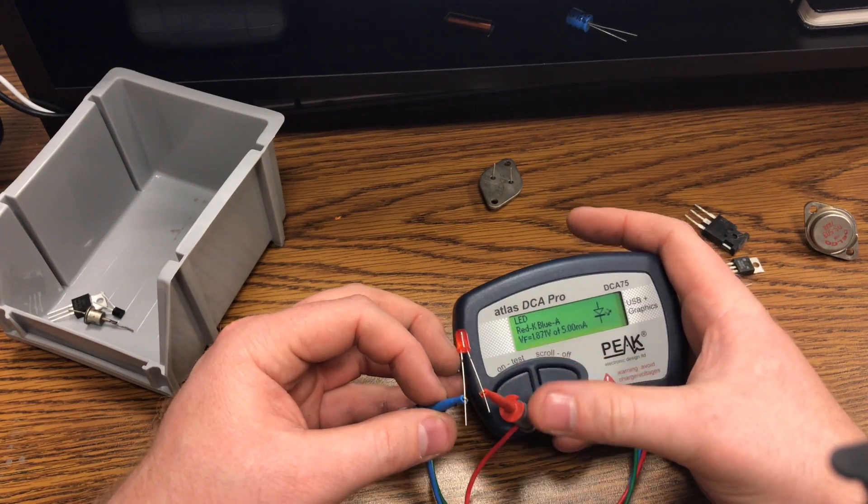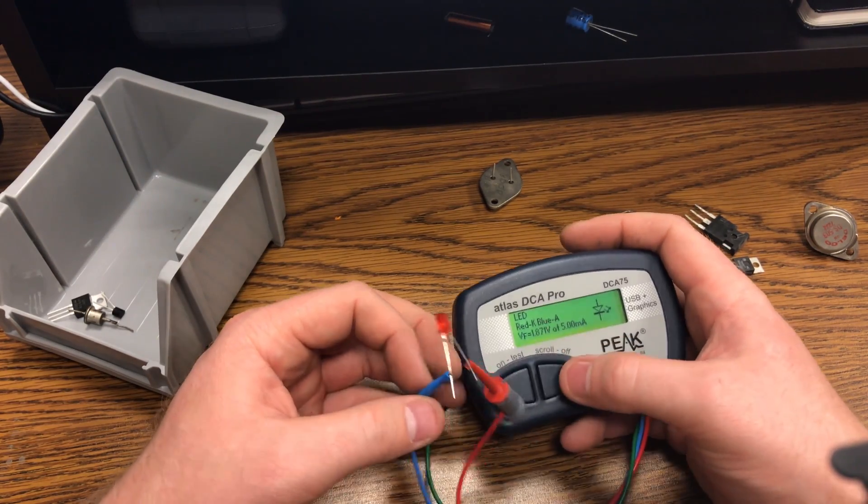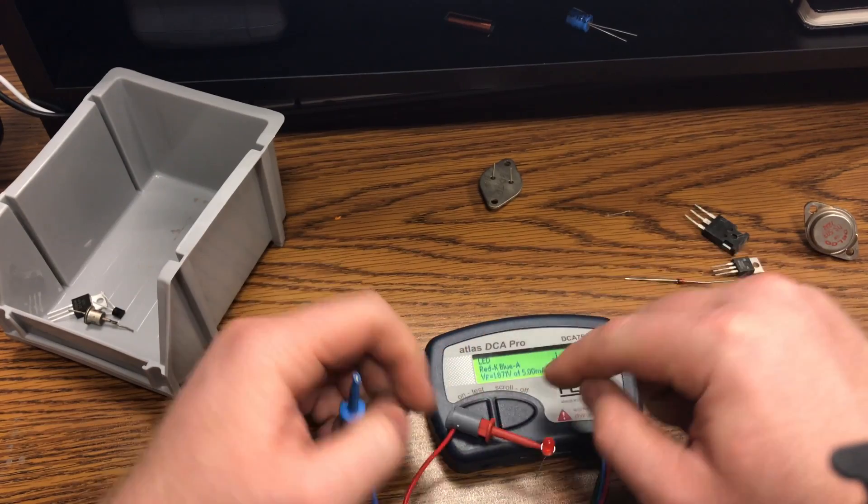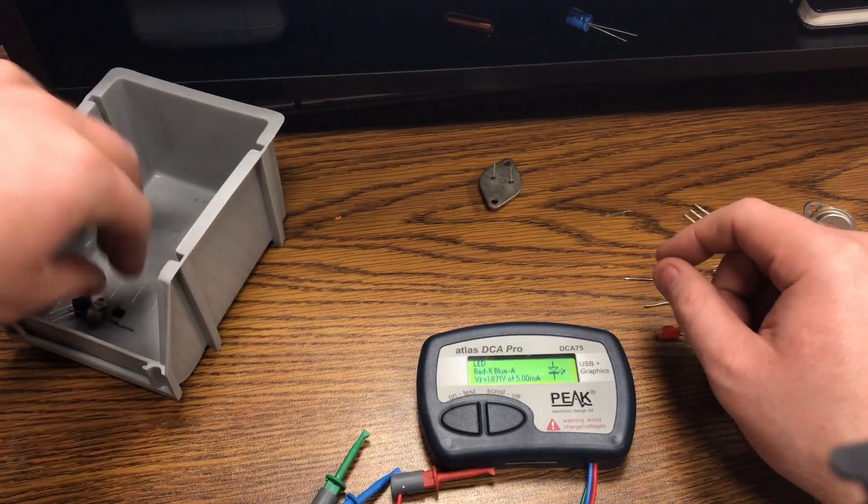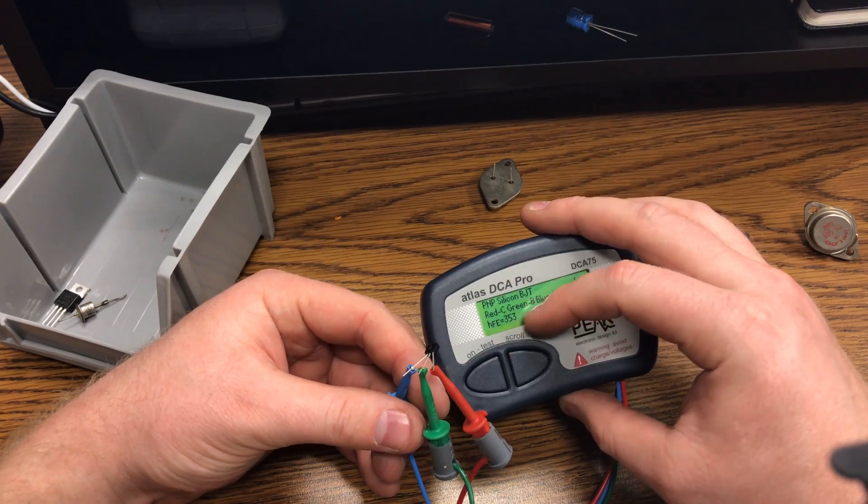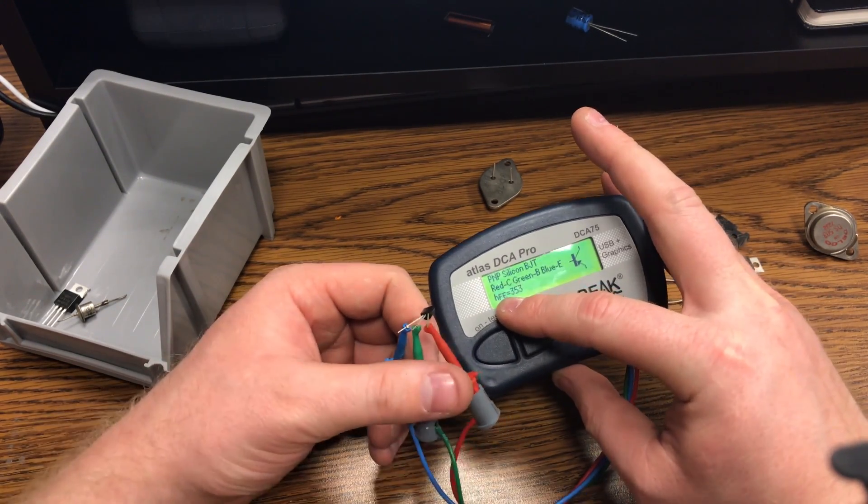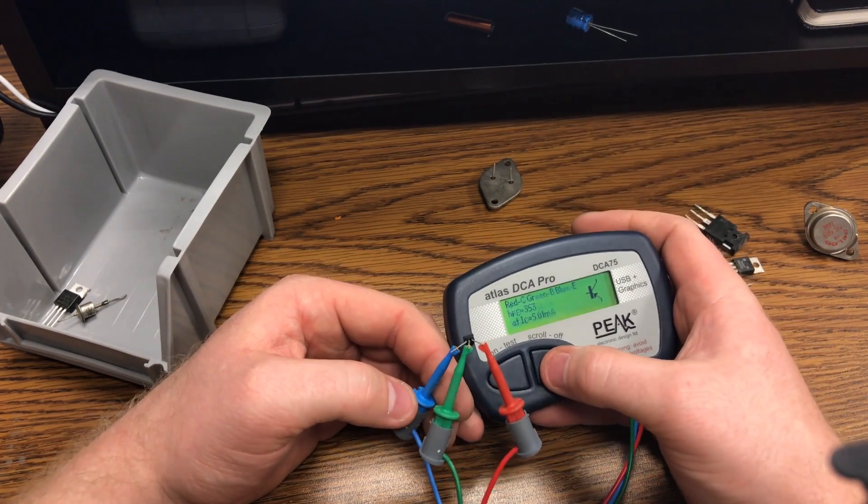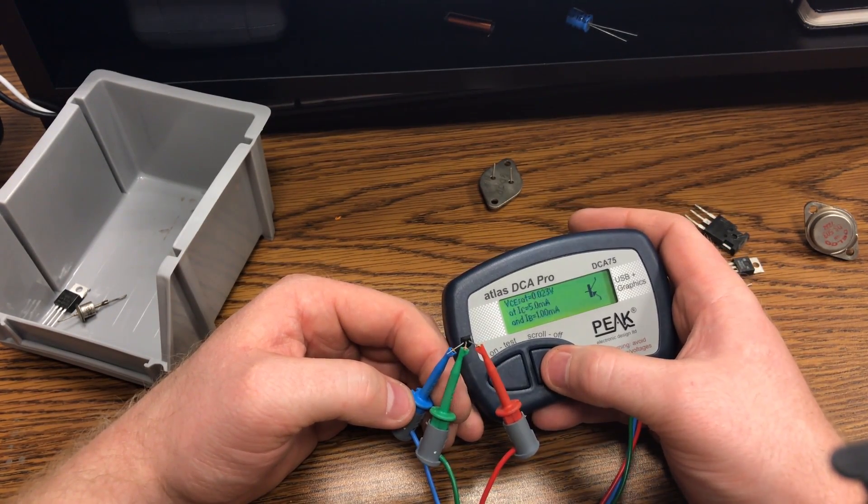Knows that it's an LED, and the red is cathode, blue the anode, gives you the forward voltage. That's all it gives you for LEDs. So PNP silicon BJT, red collector, green is the base, blue is the emitter, and it gives you all your parameters here.